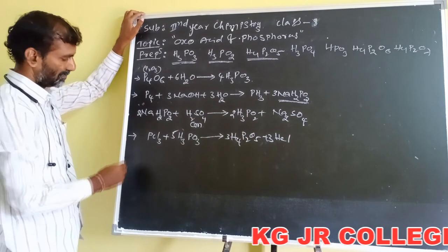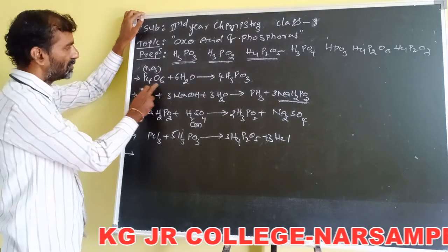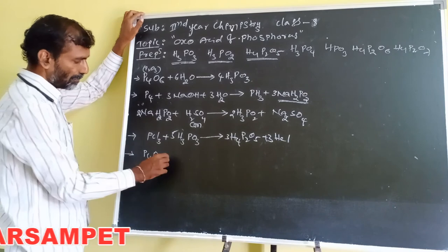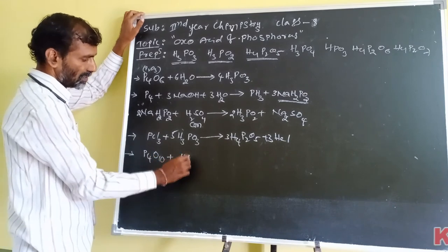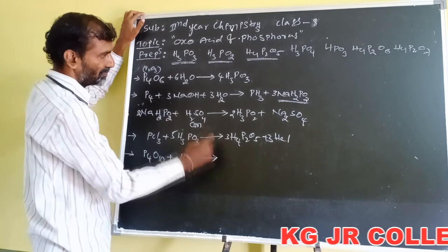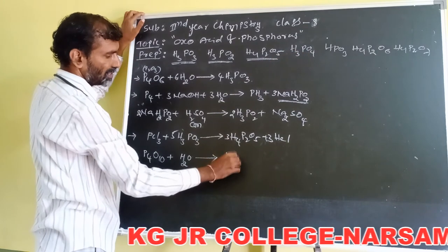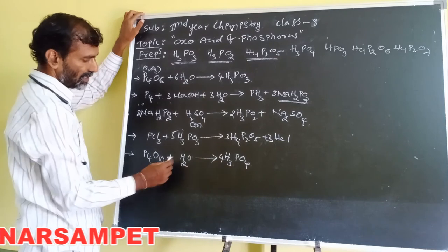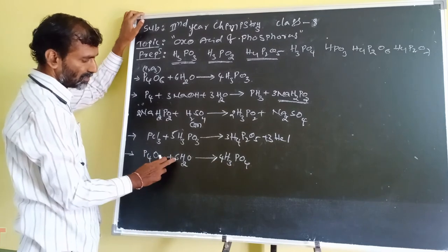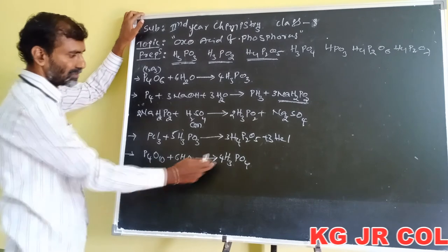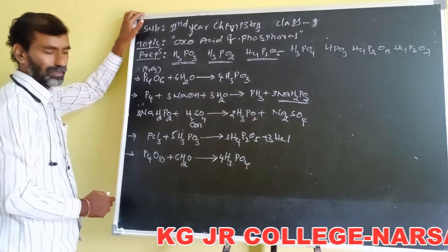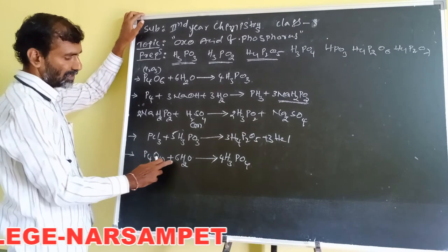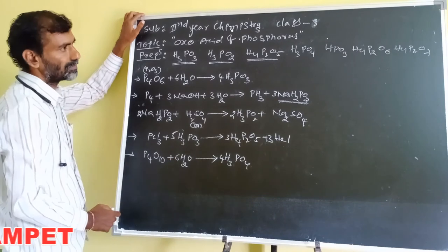Next, phosphoric acid. Here P4O10, the dimer of P2O5, that is P4O10, undergoes hydrolysis to give H3PO4. P4O10 plus 6 moles of water gives 4 moles of H3PO4. P4O10 dissolved in water, we get H3PO4. This is complete.